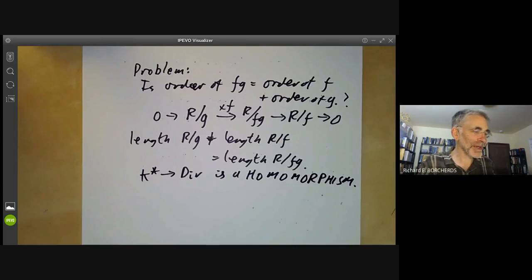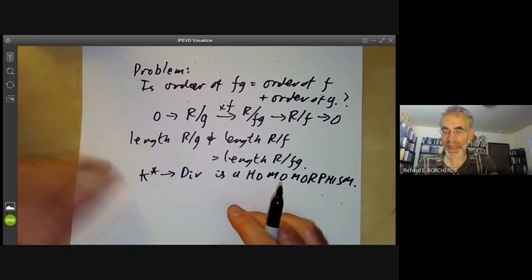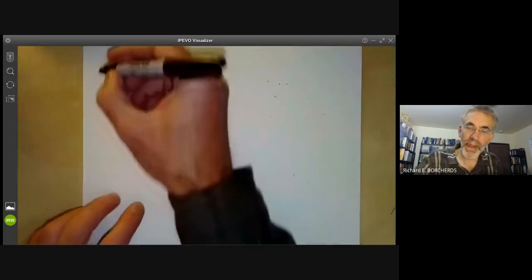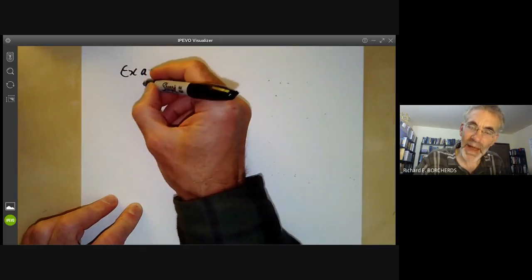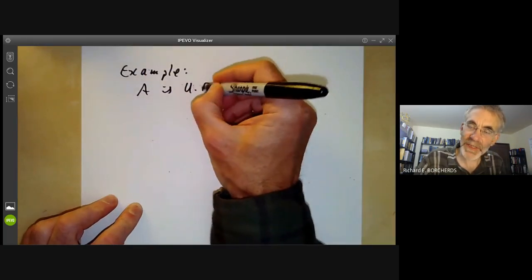This shows that the map from K star to the divisor class group is a homomorphism of groups. So can we work it out? In general, it's a bit tricky, but there are some cases when it's quite easy to work out.